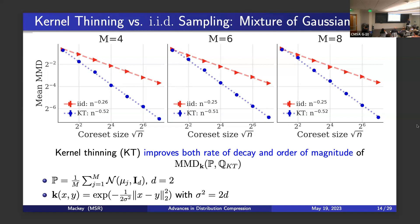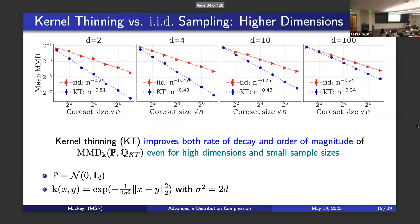In higher dimensions, running the same experiment on a standard Gaussian from dimension 2 up to dimension 100, even with those log factors with D, we find that even in dimension 100 we're still seeing improved rates of decay and improved orders of magnitude from kernel thinning, even when dealing with a small number of points like eight.